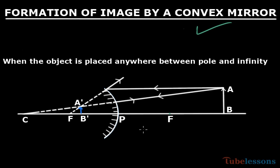This is a convex mirror. A diminished and virtual image will be formed by a convex mirror whatever may be the position of the object.